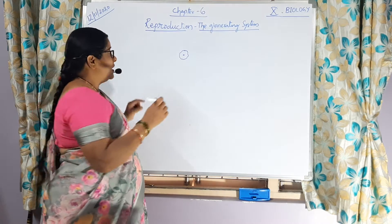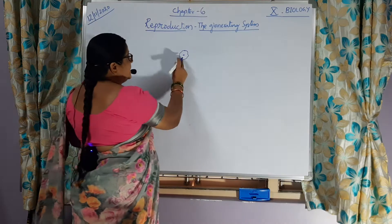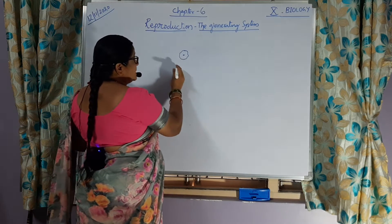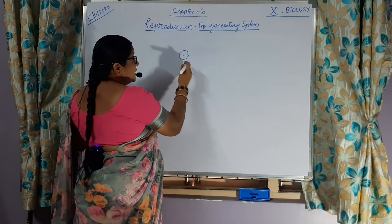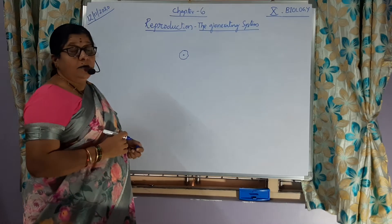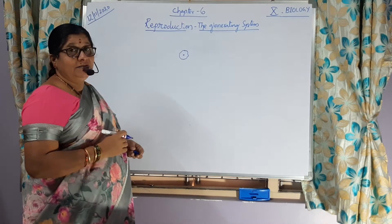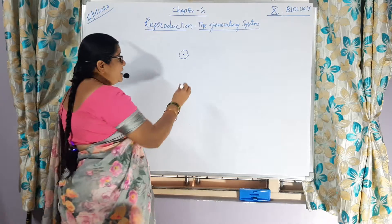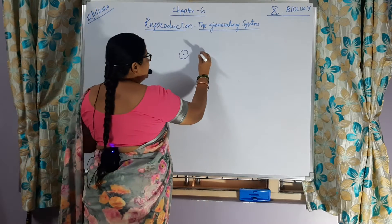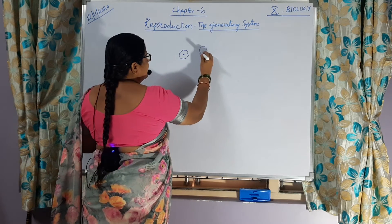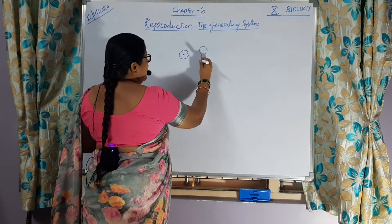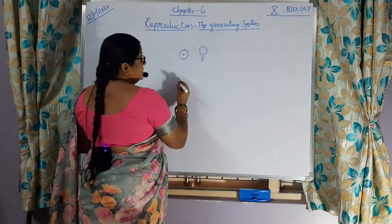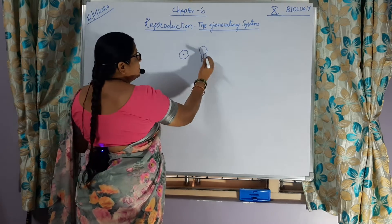So, before that what is happening? This microscopic mother cell undergoes repeated mitotic cell divisions and further mitotic cell division, and it is going to form a structure like this. And it contains two nuclei.